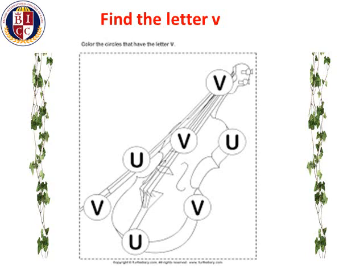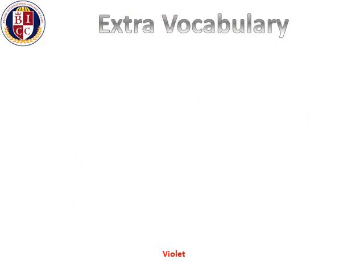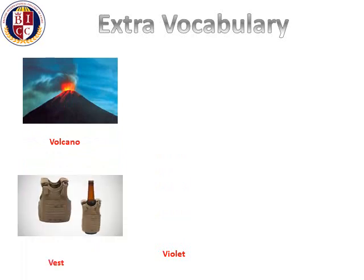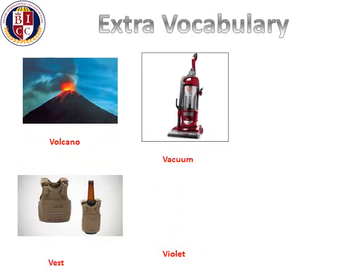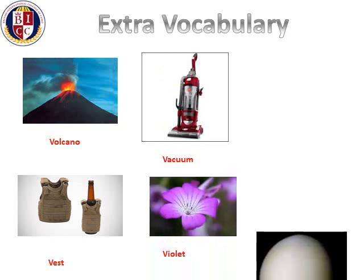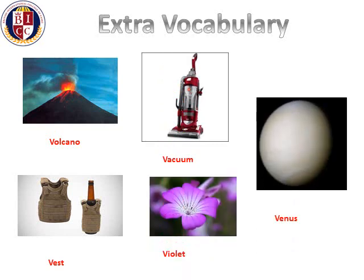There are four. Time for some extra vocabulary now: volcano, vest, vacuum, violet, Venus.